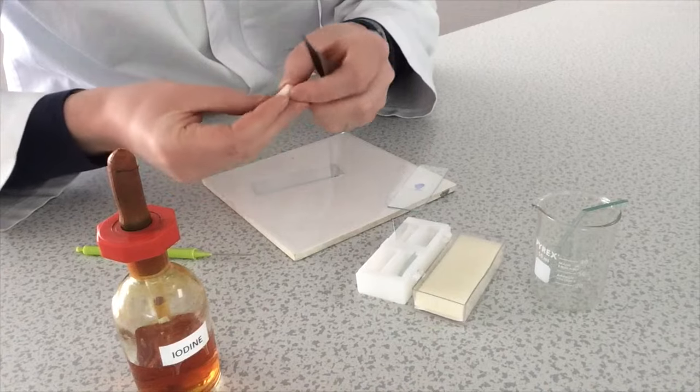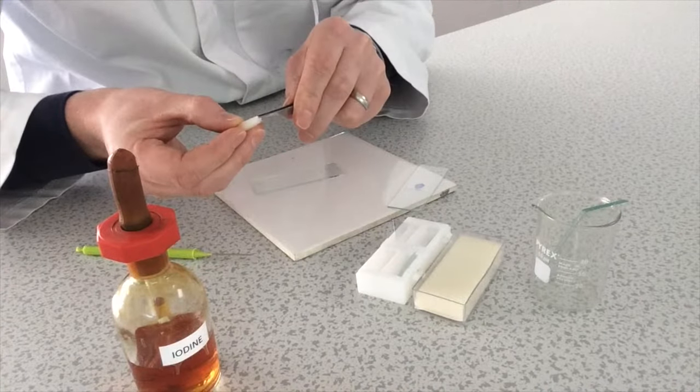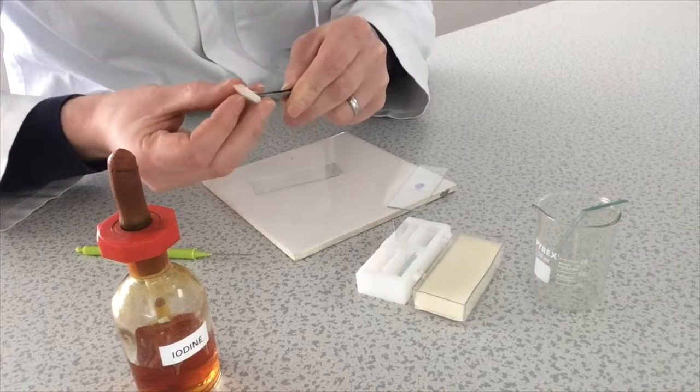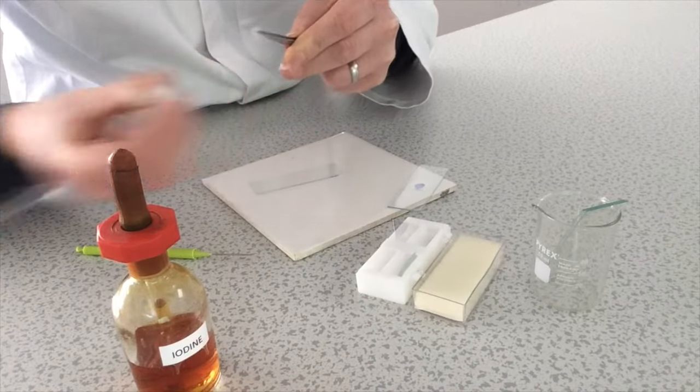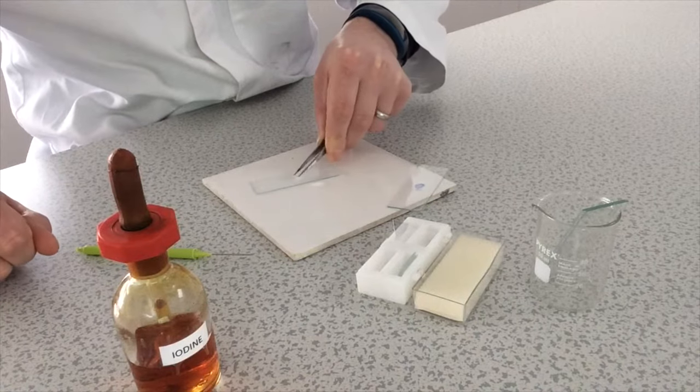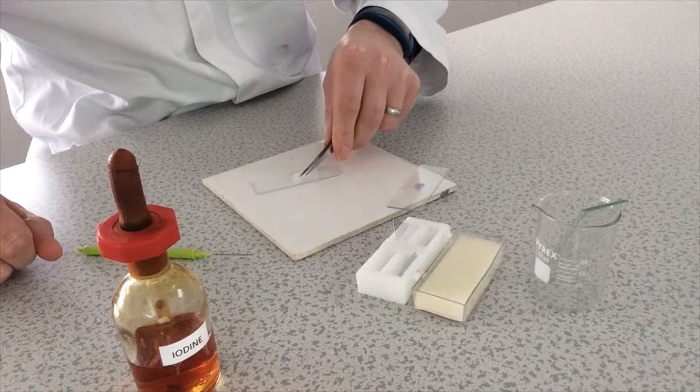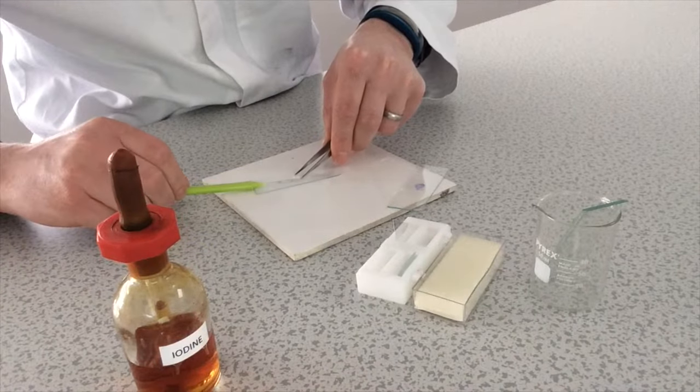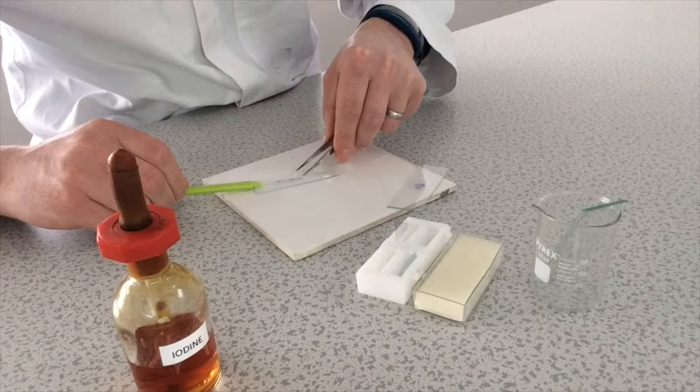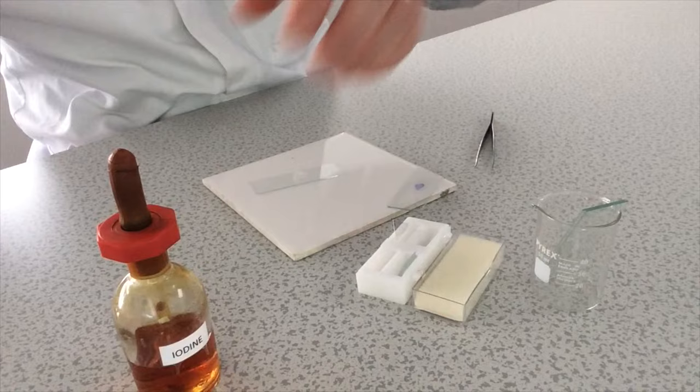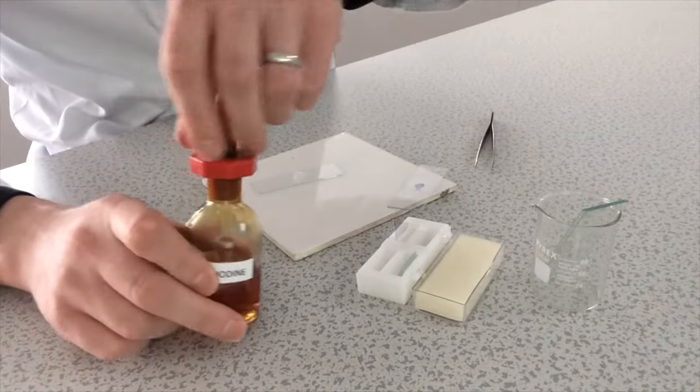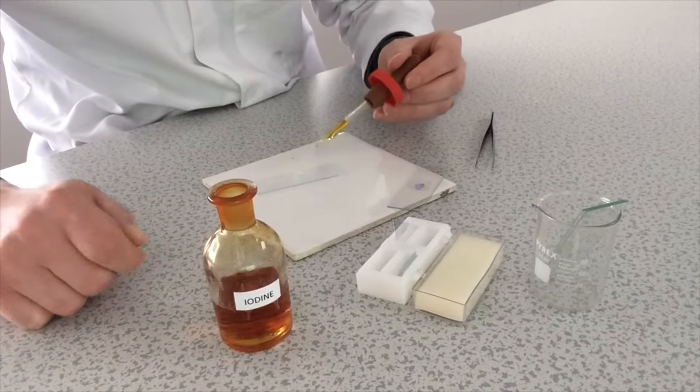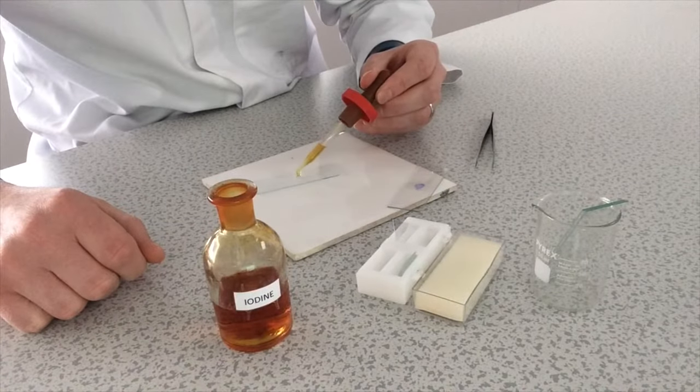Just find the epidermis. There we are. Just lay that onto the slide. It's quite a big piece I have here so it's curling up a bit. And that should be perfect. Now I need to add a drop of iodine to the onion epidermis on the glass slide.